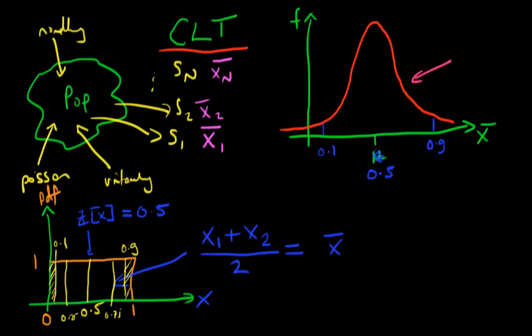If I calculate the sample mean for my sample, it turns out that independent of the population PDF, the sample mean will be at least asymptotically normally distributed around the true mean mu — or in this case, the value of 0.5. And the Central Limit Theorem is going to play a role in forming a lot of our econometric test statistics, which we are going to cover in future videos.